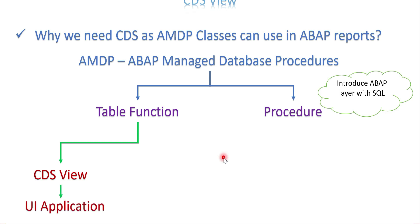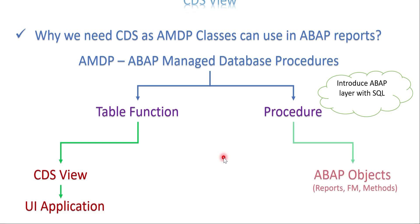The data flow for the UI scenario is: database → CDS → OData service → UI application. For the same business requirement that needs to be achieved in ABAP reports or ABAP objects, we use procedures. The key idea is: if you need to add an ABAP layer within the SQL, go with AMDP. If it's only for ABAP programs, go with procedures.